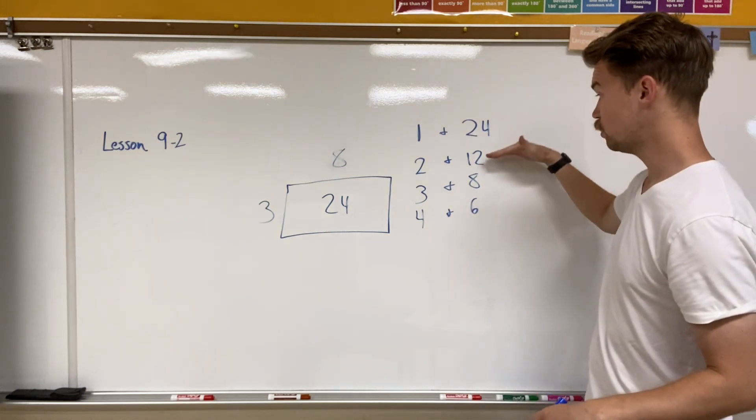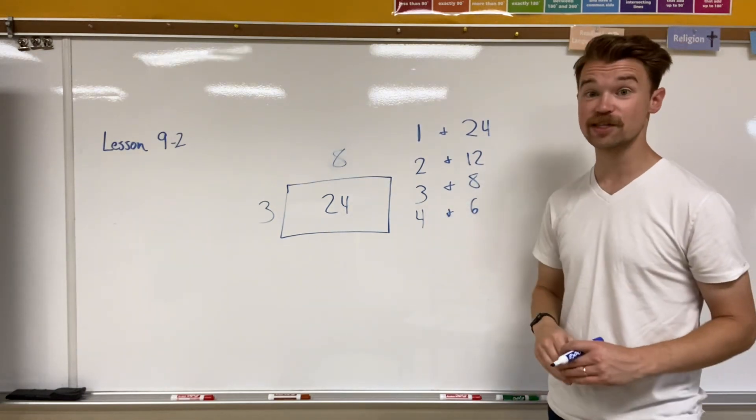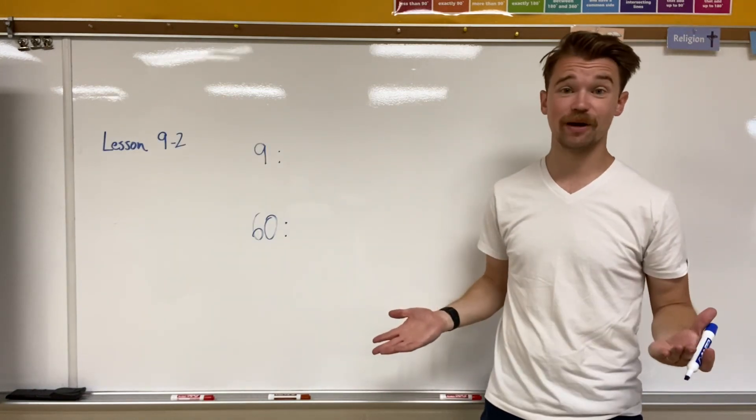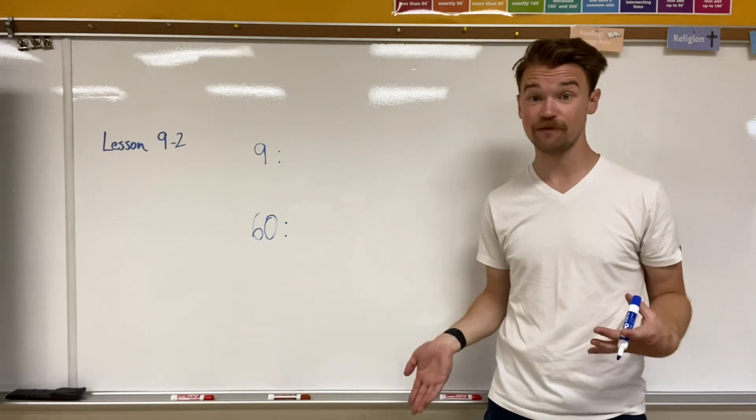So 24 has one, two, three, four sets of factor pairs. Just like factors, there are some numbers that have a lot of factor pairs, and there are some numbers that don't have a lot of factor pairs.